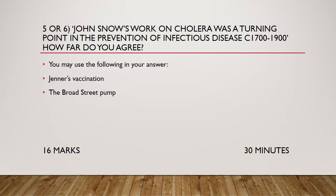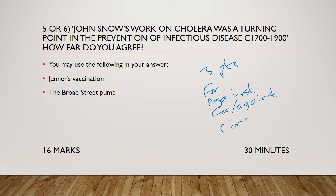The last question on this paper is question five or six — you have a choice. It will usually give you a statement and say how far do you agree. You want to make three points. I would argue you want to try and go for a point for, and then try and go for a point against, then choose either a for or an against. You want an overall conclusion, and for each of those I would say you want some sort of mini conclusion or mini judgment. The examples they give are Jenner's vaccination and the Broad Street pump. You'd also need to come up with your own. That's 30 minutes, 16 marks — this is the one that's going to get you most of the marks on this paper.